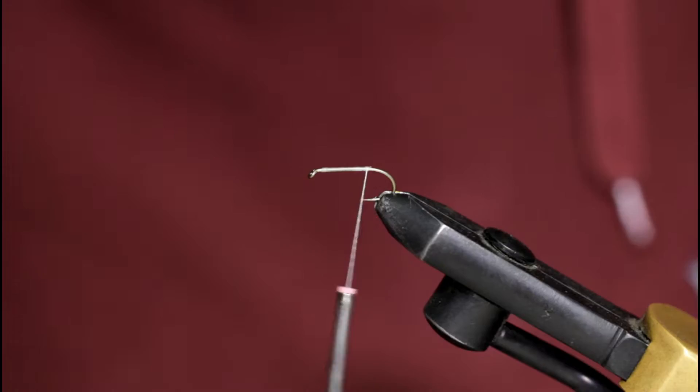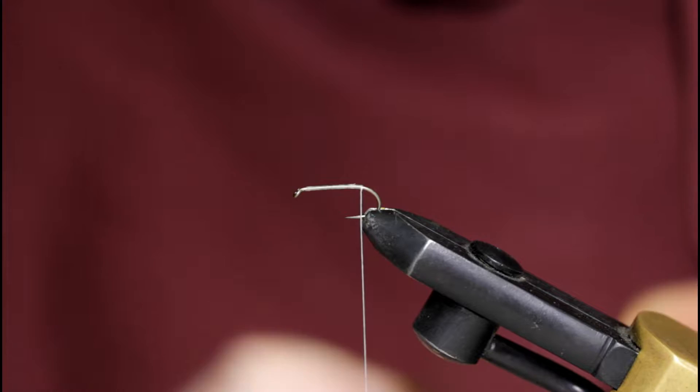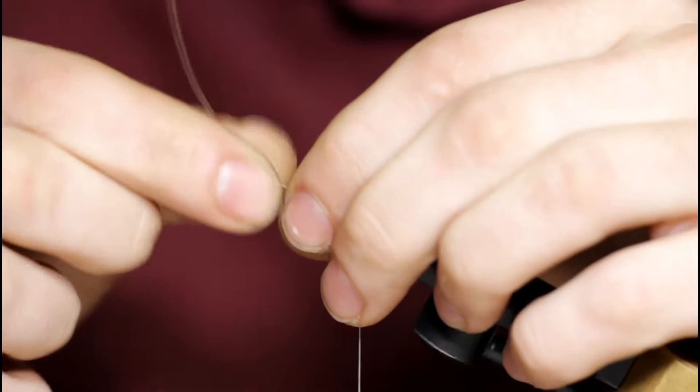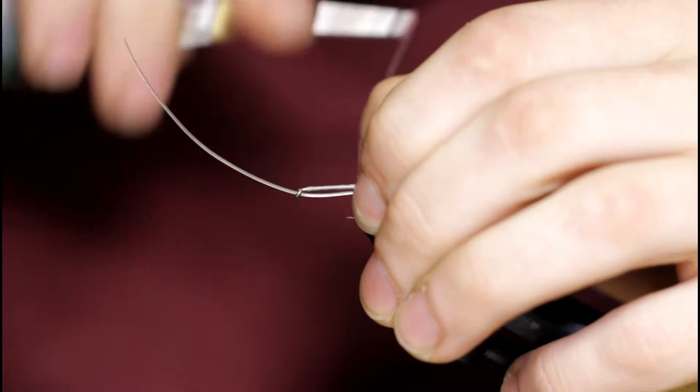I'm just going to snip off the tag here, come down to the barb. Now I'm going to grab a piece of monofilament here, this is 30 pound test monofilament, slide it through the hook eye, under the shank, and tie it in, touching turns forward here.